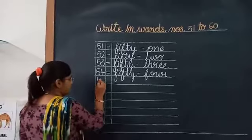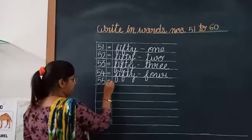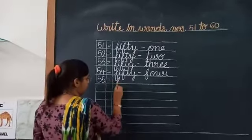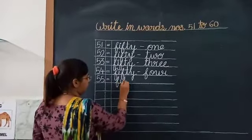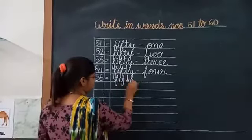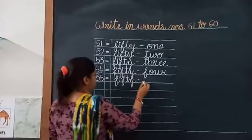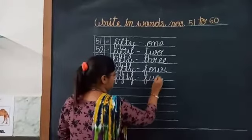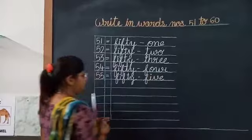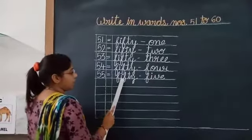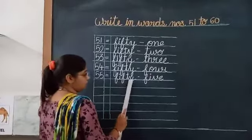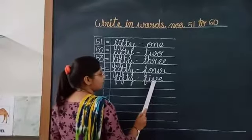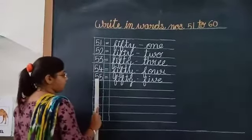Next, 55. F-I-F-T-Y, 50. F-I-V-E. F-I-V-E, 5. F-I-F-T-Y, 50, F-I-V-E, 5. 55.